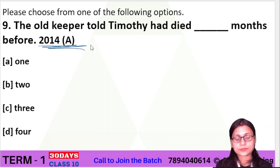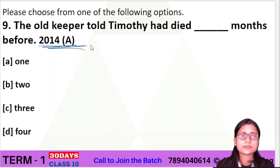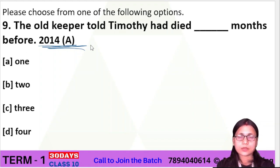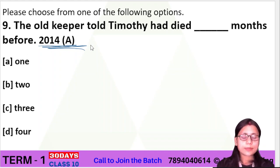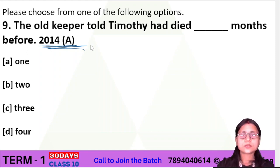When Ruskin Bond's grandparents visited Lucknow, grandfather thought he would visit Timothy at the zoo. He went to see Timothy, but when he got there, he saw a tiger and thought it was Timothy. However, the old keeper said that Timothy had died.